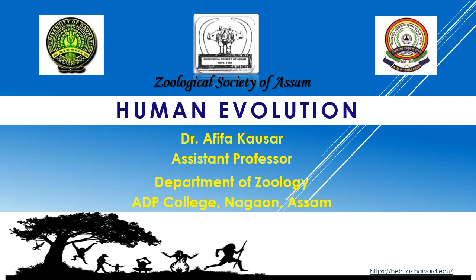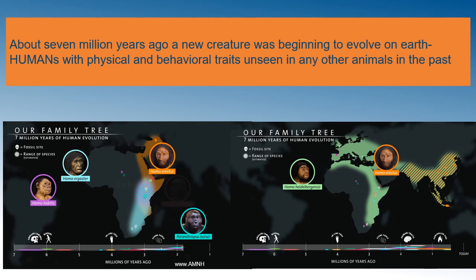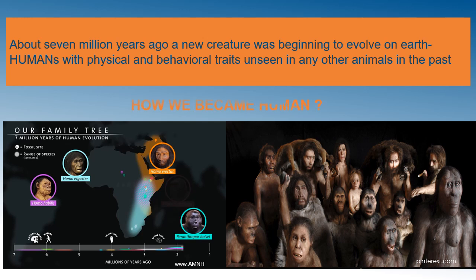Hello viewers, welcome to the online educational channel of the Geological Society of Assam. I'm Akifa Kosser and today we shall be learning about human evolution. The story of man began about seven million years ago when we emerged from small quadruped mammals and gradually became the dominant species on the planet. We shall be discussing how we became human in this presentation.